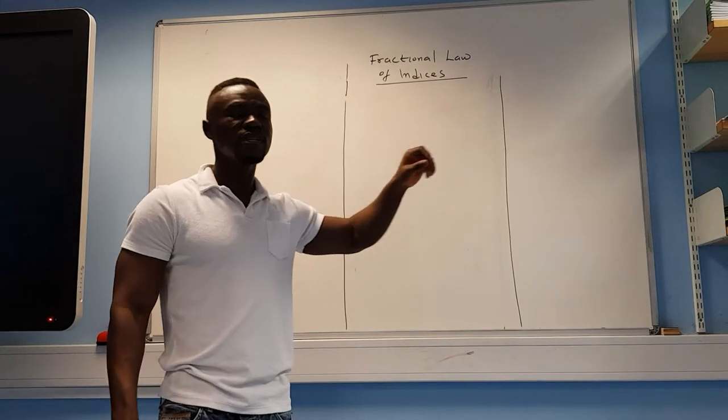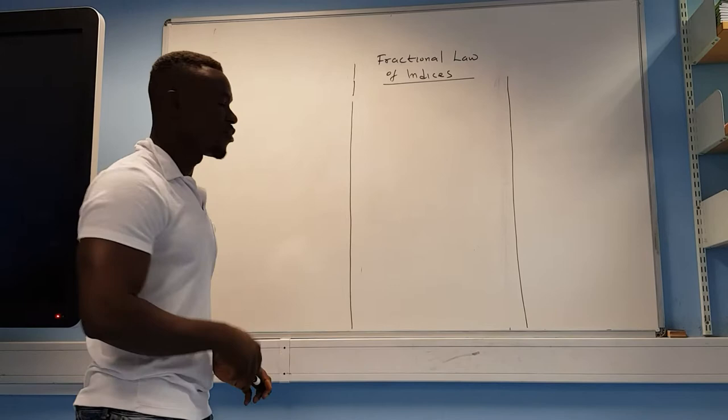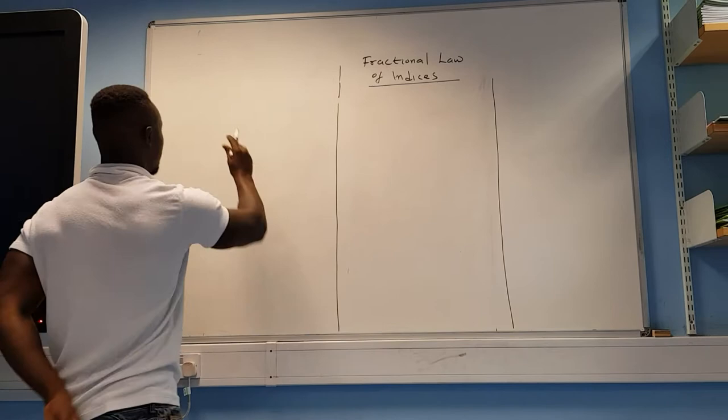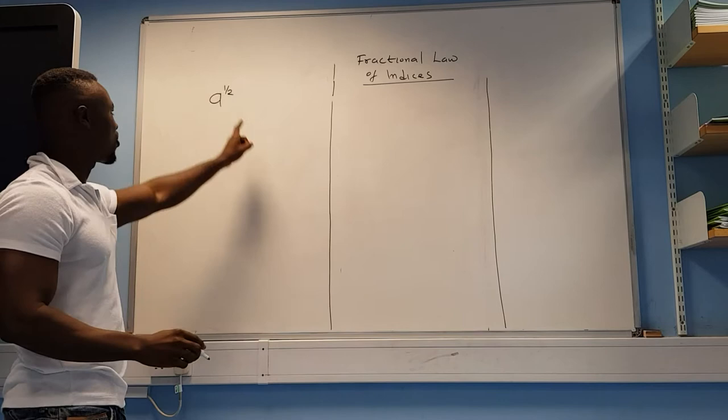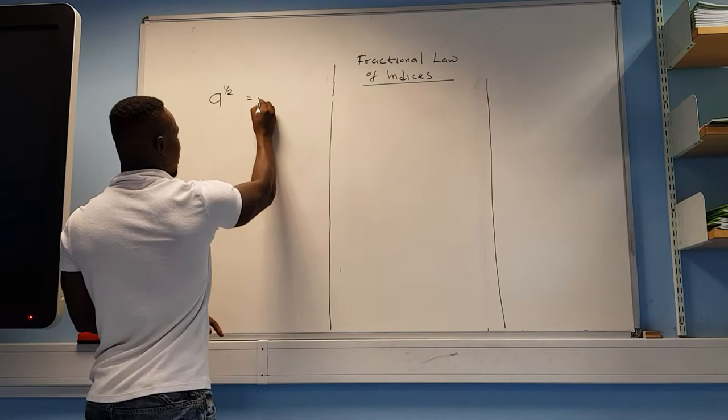Today we look at fractional laws of indices and the negative law as well. Fractional indices means the power will be in fraction form. For example, if I write a to the power of a half, please don't make the mistake of halving the number — this means the square root. So find the square root of the number.